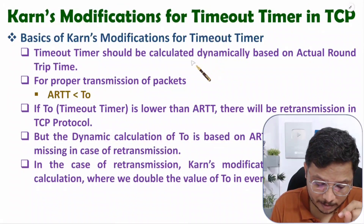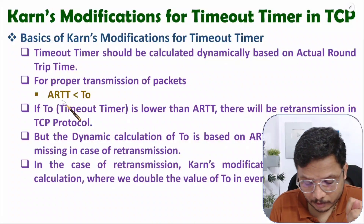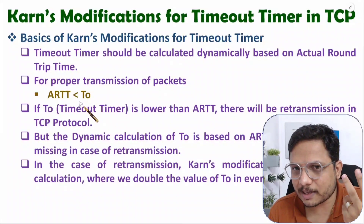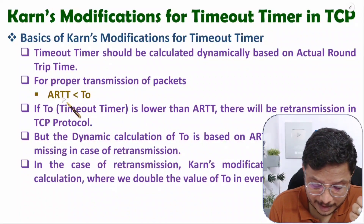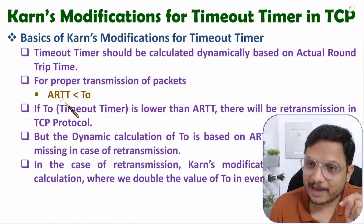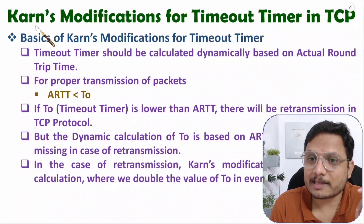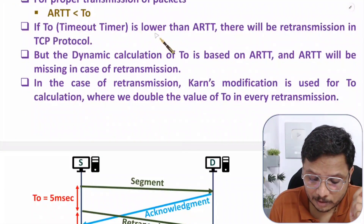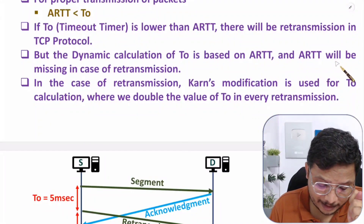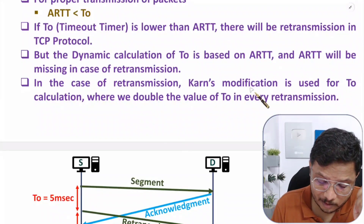In that situation, you will use Karn's modification. Karn's modification explains how the timeout timer should be calculated dynamically — it is based on actual round trip time. But what if ARTT is greater than T0? If ARTT is lower than T0 there will be proper transmission, but if ARTT is greater than T0 you will have to do retransmission. During retransmission, you don't have ARTT, so you use Karn's modification.